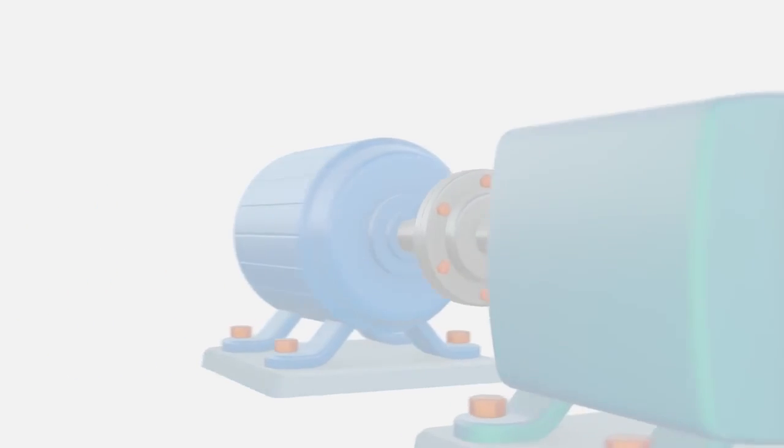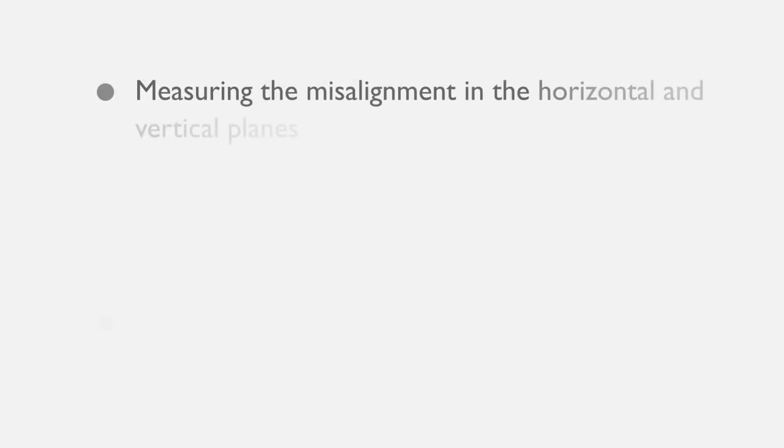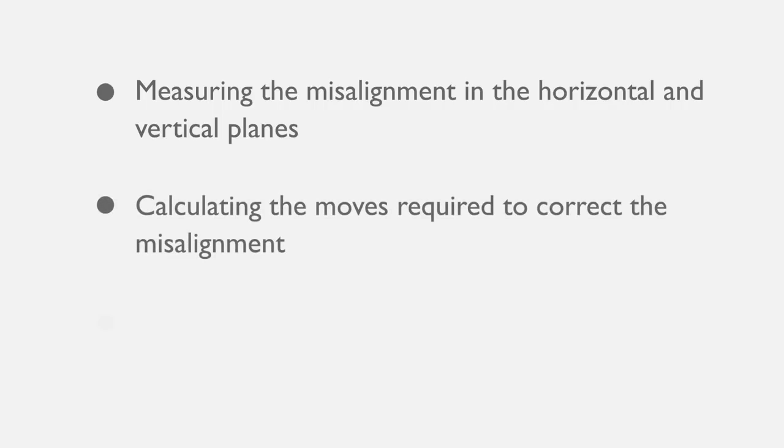The challenge of precision alignment can therefore be defined as, first, measuring the misalignment in the horizontal and vertical planes, second, calculating the moves required to correct the misalignment, and finally making the prescribed adjustments.